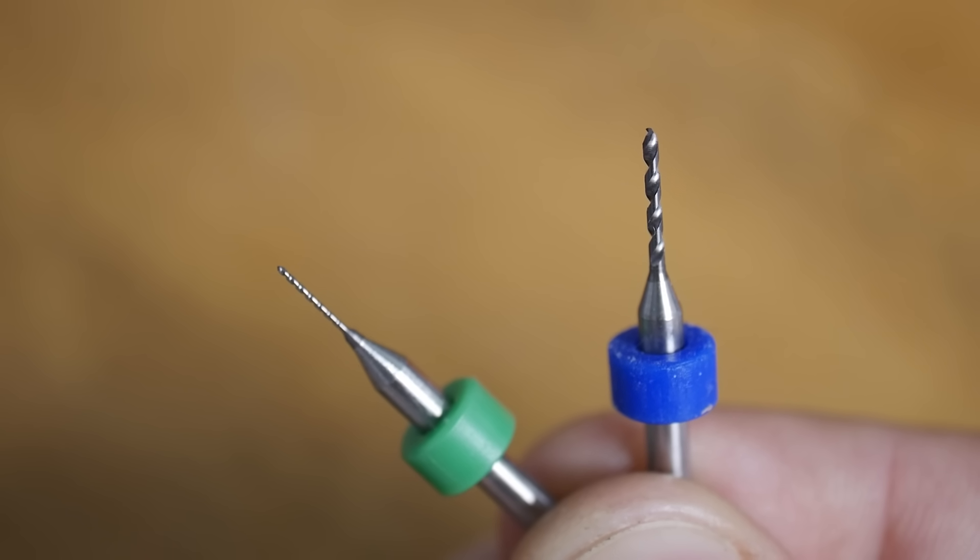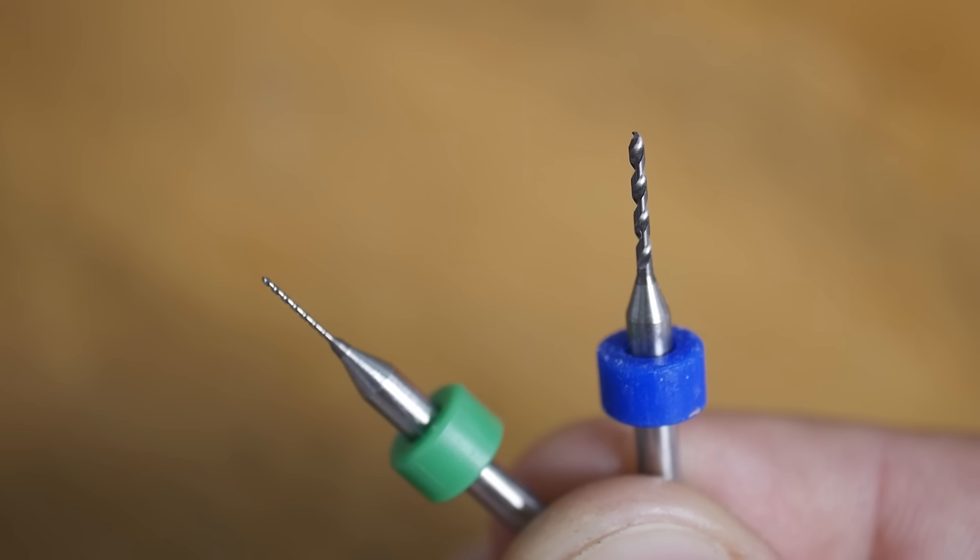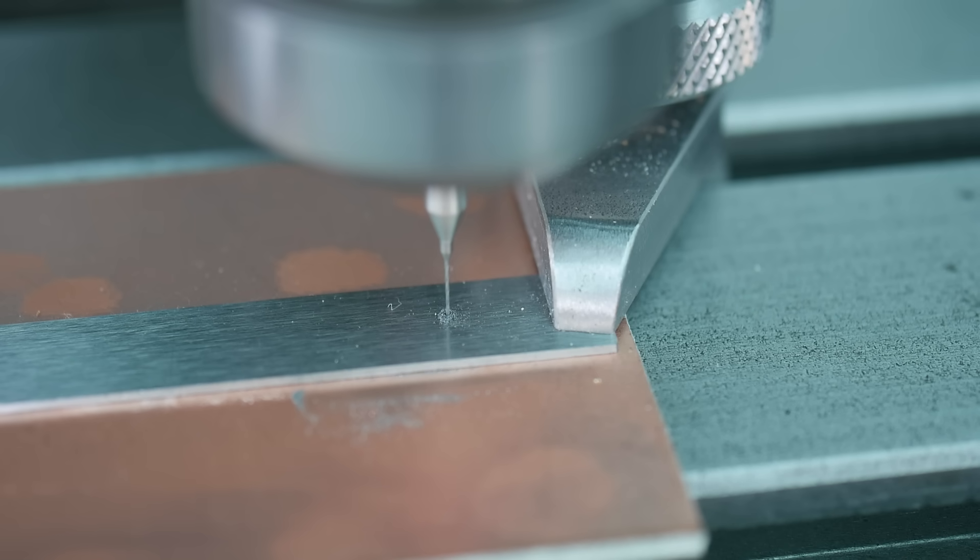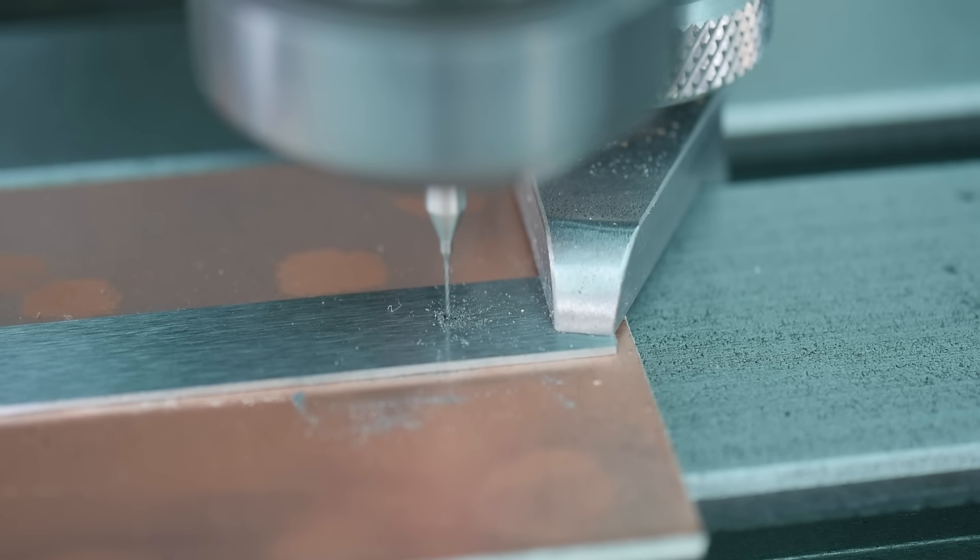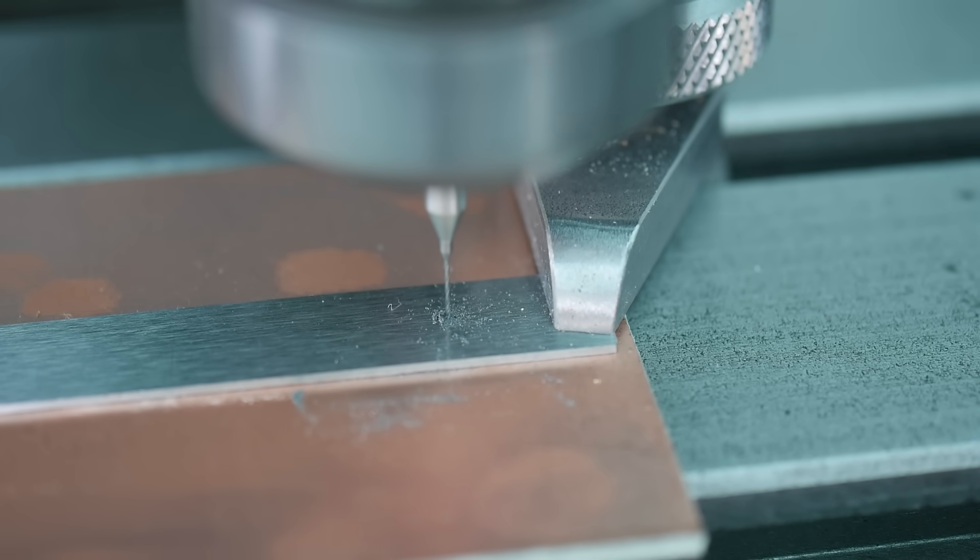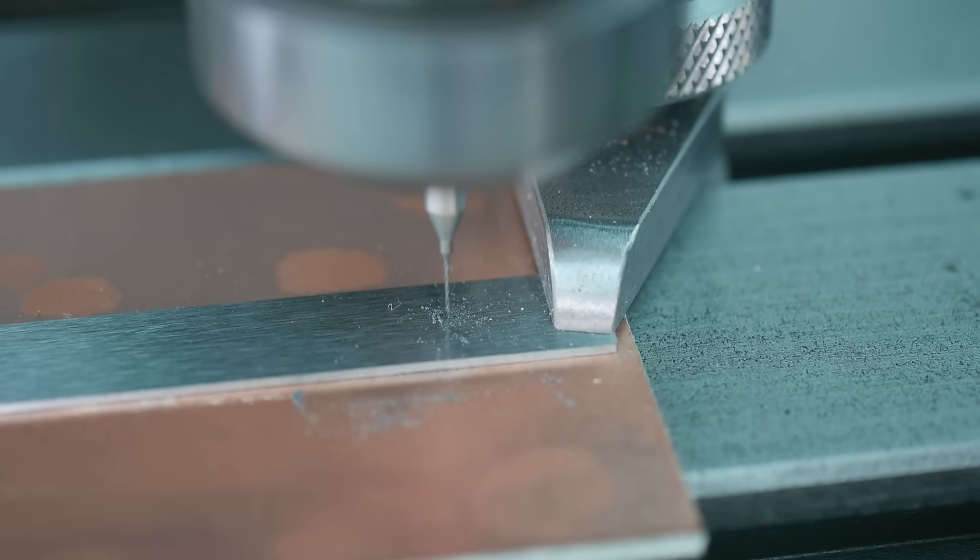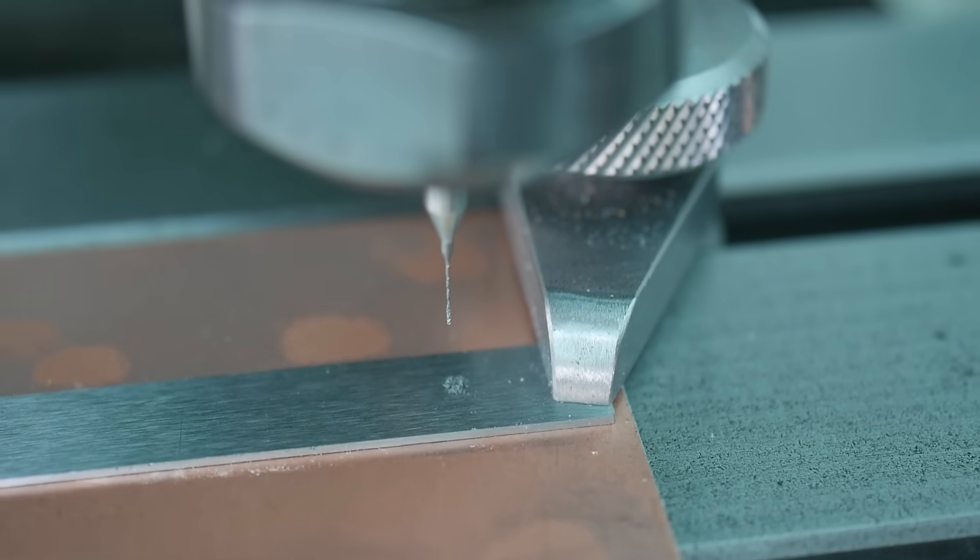I'm making this engine body from annealed tool steel, and the drill bits kept wandering at about half way, and considering these holes need to be accurately positioned, this just won't do. So what's going on?